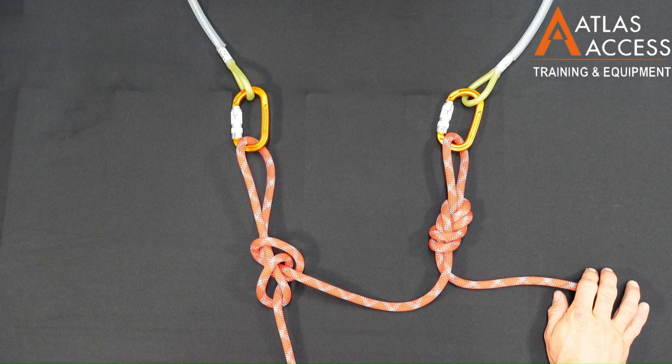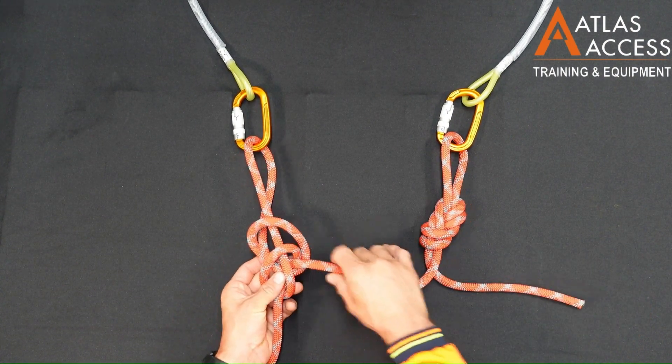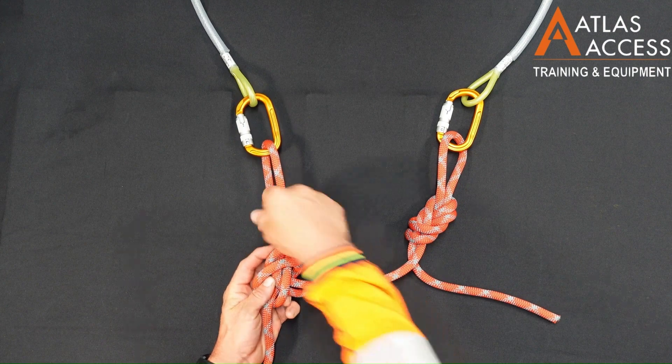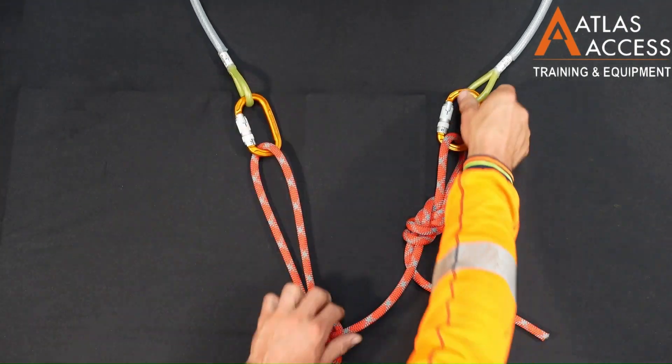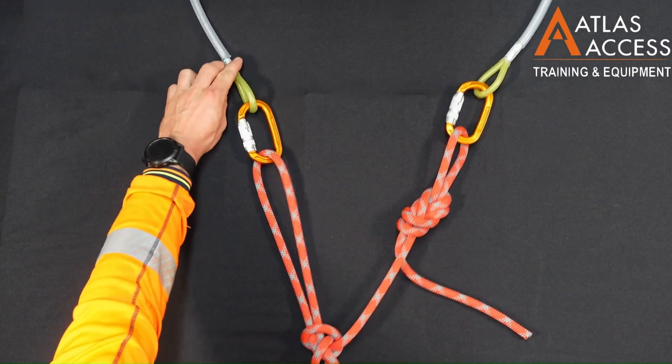In this demonstration, the anchor is not balanced. We can adjust the length of the strand through the alpine butterfly easily, as shown. Now, the load is balanced on both sides.